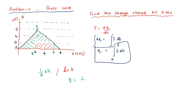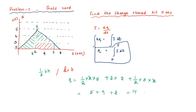So what is the charge? For the first triangle: half × base 2 × height 5, giving 5. For the rectangle: breadth = 5 − 2 = 3 and length = 3, giving 9. For the next triangle: half × base 3 × height 2, giving 3. So the total charge is 5 + 9 + 3 = 17 coulombs. This is the answer for this problem.